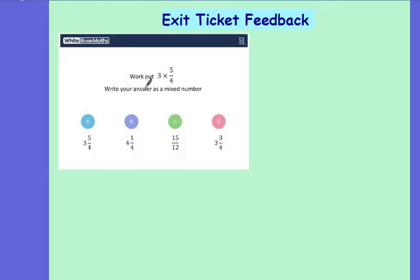For the second question, I asked you to work out 3 times 5 over 4 and to write your answer as a mixed number.